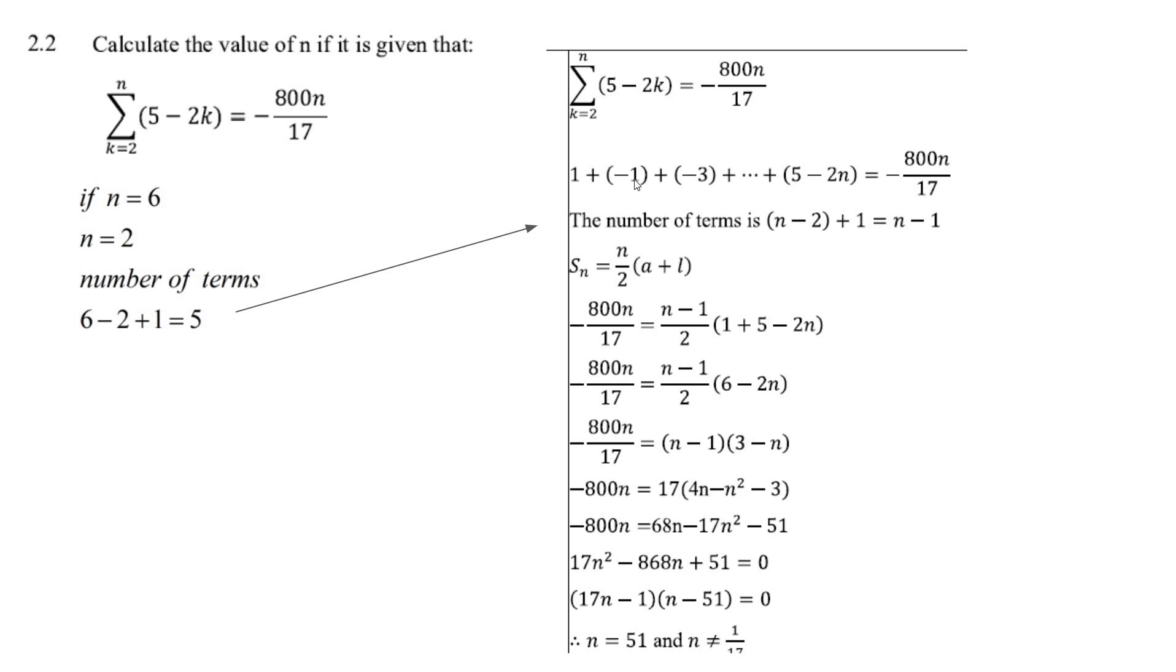Now, how do we know it's 1 minus 1 and minus 3? Well, all you do is take 2, put it in there. 2 times 2, that gives you 5 minus 4 is 1. Put in 3, you get negative 1. Put in 4, you get negative 3. You can see that it's going down by 2. And minus 2k. So now we've got what d is. d is minus 2.